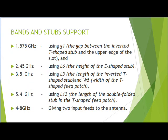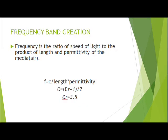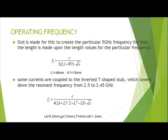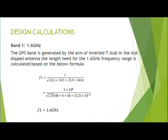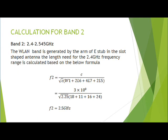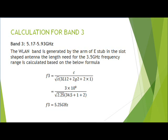The bands and stubs support 1.575 GHz for GPS, created using G1 — the gap between the inverted T-stub and upper edge of the slot — and 2.45 GHz for WLAN using L3, the length of the inverted T-stub, and width W5, the width of the T-shaped feed patch.